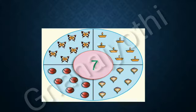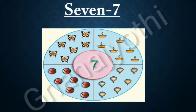Now let us study about 7. S-E-V-E-N, 7. Look at this picture, students. The things which we see in this picture contain 7 in number. That is 7 butterflies, 7 lambs, 7 balls and 7 tops.